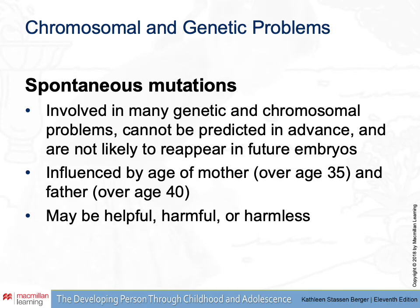One of the more common ways for chromosomal or genetic problems to emerge is through spontaneous mutations. This is when you can't really predict that genetic material is going to be transcribed in a different way. Spontaneous mutations happen by chance and are not likely to reappear in future embryos, but they can be really complex. Sometimes they don't result in any functional impairment, but other times they do. The frequency of spontaneous mutations increases as a potential mother or father gets older, so as we age it's more likely that our offspring will have more mutations in their genetic material. Usually these are harmless, might even be helpful sometimes, and rarely are they harmful — but when they are, they can be significant.